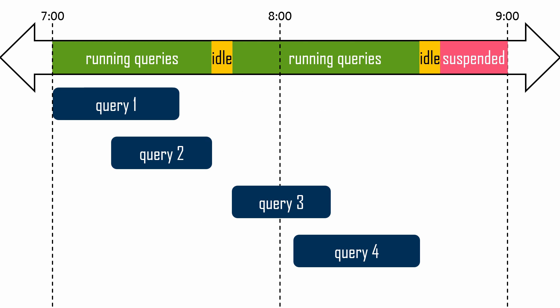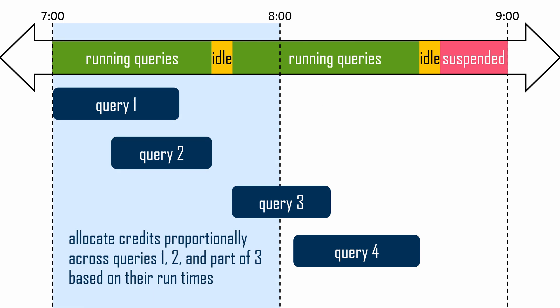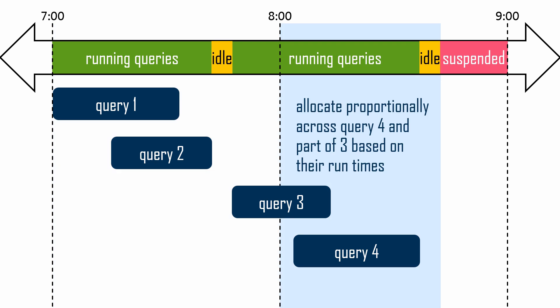My last topic is about allocating a cost to each query using the granular usage data that Snowflake provides for billing transparency. Costs are computed based on cluster uptime, not based on query runtime, so we'll have to do some math. During a given hour, credits consumed have to be allocated proportionally across queries that ran. Similarly, credits consumed while queries were running and while the cluster was idle need to be spread proportionally.